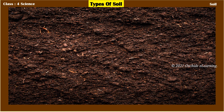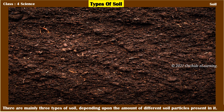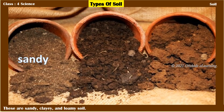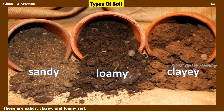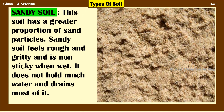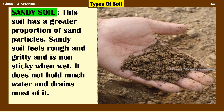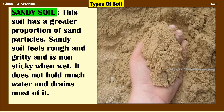There are mainly three types of soil, depending upon the number of different soil particles present in it: sandy, clayey, and loamy soil. Sandy soil has a greater proportion of sand particles. It feels rough and gritty and is non-sticky when wet. It does not hold much water and drains most of it.